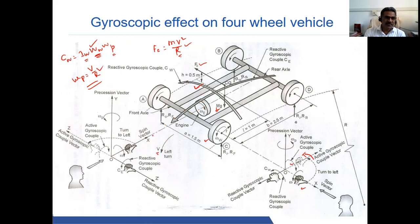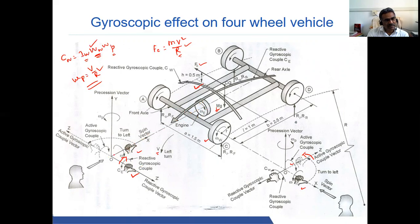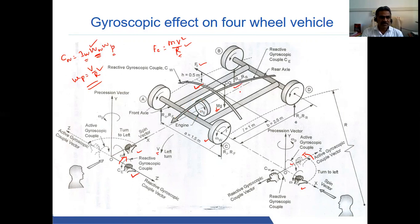Similarly, the engine is rotating — when viewed from the front, it rotates in the clockwise direction — and when the vehicle takes a left turn, it also creates a gyroscopic couple. Using the right-hand rule, the active gyroscopic couple direction is determined, and the reactive gyroscopic couple direction is opposite. So when taking a left turn, the reactive gyroscopic couple due to the engine acts in this direction.